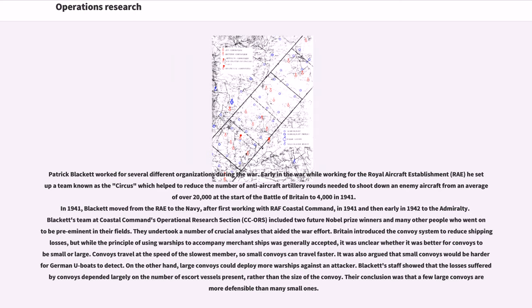Britain introduced the convoy system to reduce shipping losses, but while the principle of using warships to accompany merchant ships was generally accepted, it was unclear whether it was better for convoys to be small or large. Convoys travel at the speed of the slowest member, so small convoys can travel faster. It was also argued that small convoys would be harder for German U-boats to detect. On the other hand, large convoys could deploy more warships against an attacker. Blackett's staff showed that the losses of a convoy depended largely on the number of escort vessels present, rather than the size of the convoy. Their conclusion was that a few large convoys are more defensible than many small ones.